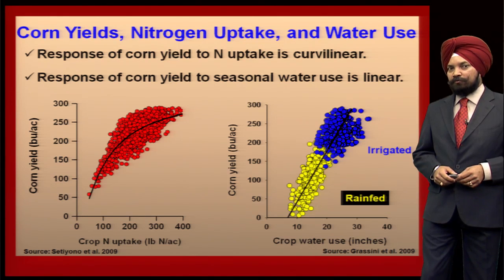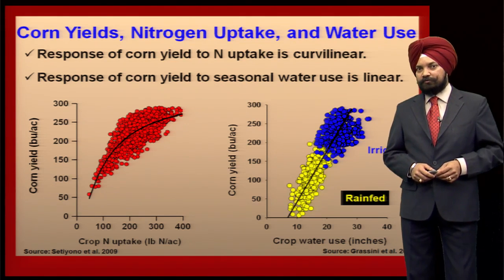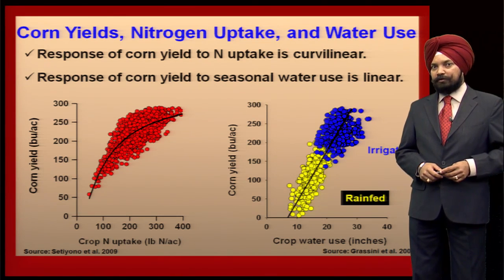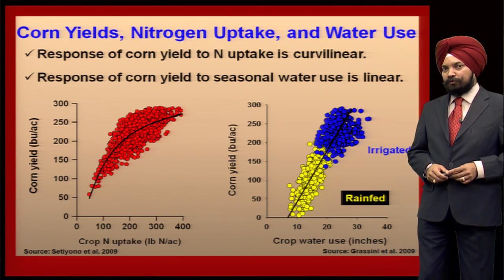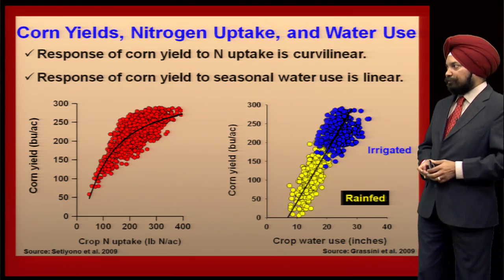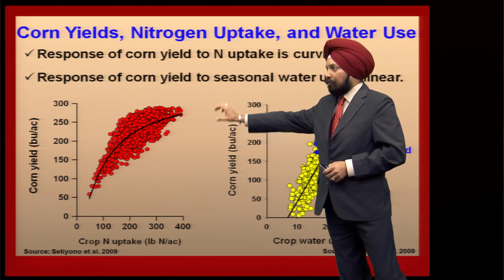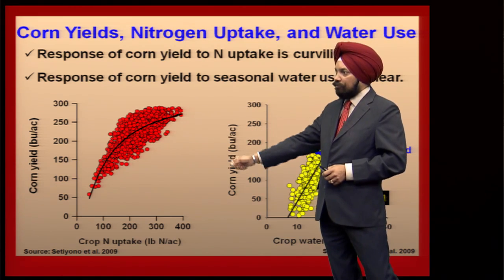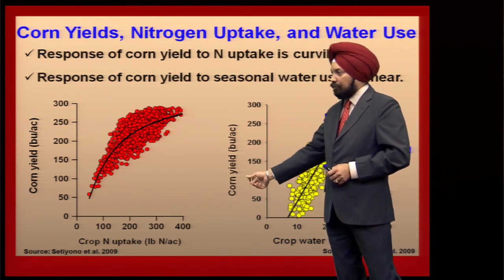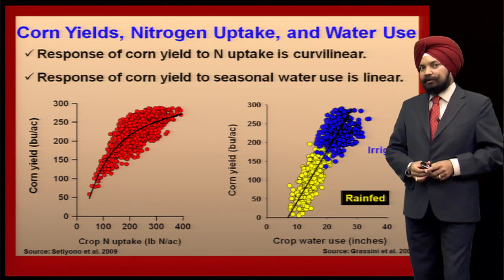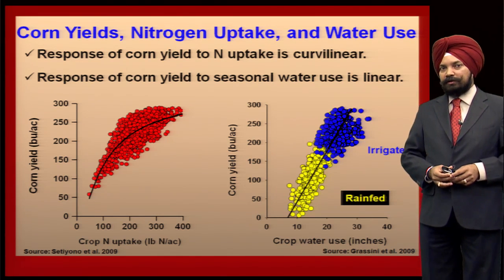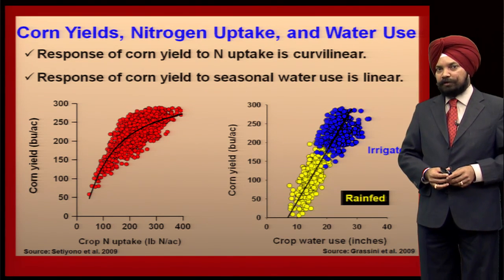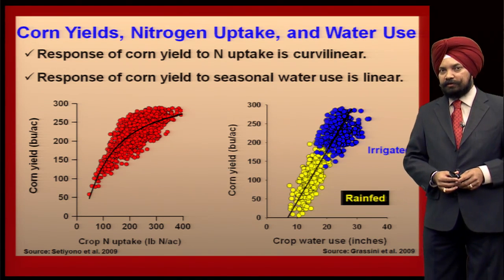Let's first talk about why nitrogen fertilizer and irrigation water are two important parameters for corn. In this slide I am showing two different graphs. On the left graph I am showing red dots with a relationship between corn yield and crop nitrogen uptake on the x-axis, and it explains that corn yield increases with the increase of crop nitrogen uptake and that the relationship is curvilinear in nature.